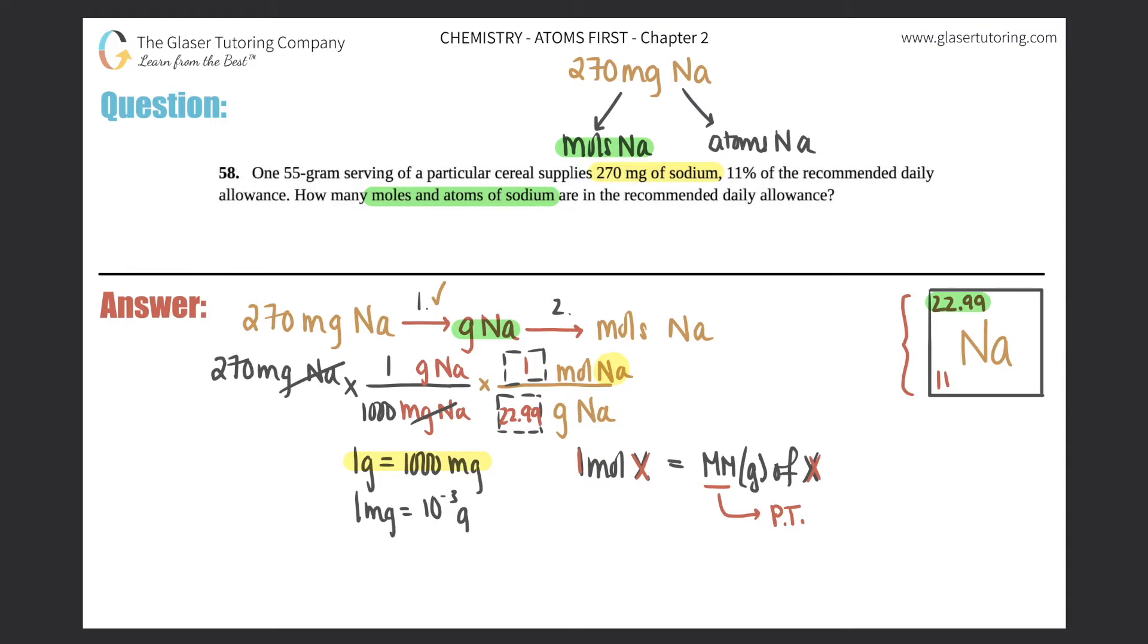If you don't want to put 22.99 and round to 23, that's fine with me. I just put the numbers that are in your periodic table in the OpenStax textbook. So grams of sodium cancel out and you're left with the unit that you want, which is moles of sodium, at least for the first part. We want moles.